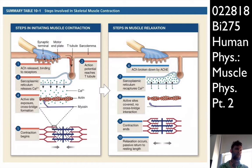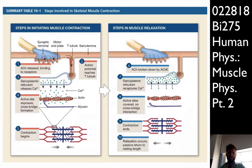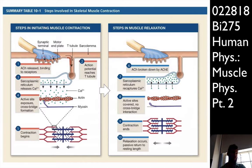When we relax, the neural stimulus ends, acetylcholine diffuses away from the receptor, and acetylcholinesterase breaks it down. The sodium-potassium ATPase re-establishes the chemical gradient. Calcium is re-sequestered by the calcium pumps into the sarcoplasmic reticulum. Calcium diffuses off the actin filaments and contraction ends. Various passive and active forces bring the muscle fiber back to resting length.